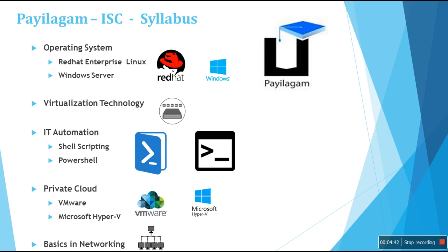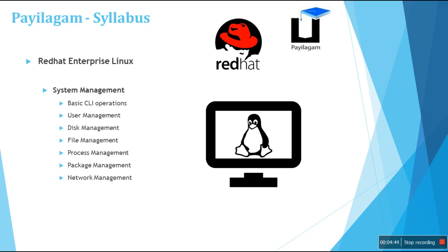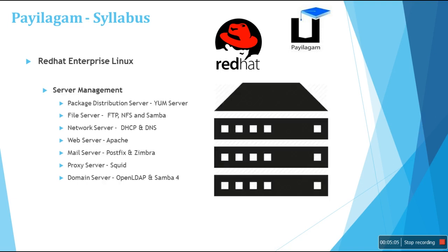For Red Hat and Linux, we first cover system management — the commands and how to operate with Linux. We will cover basic CLI operations, command-line operations, user management, disk management, file management, process management, package management, and network management.